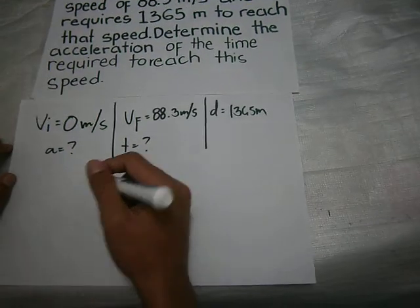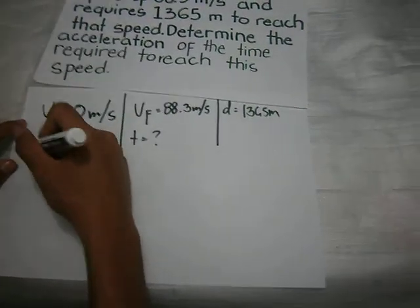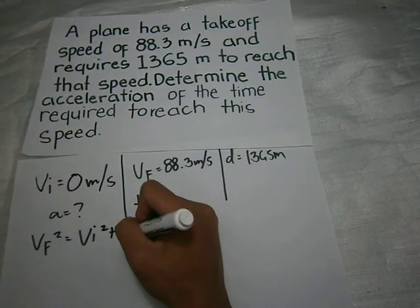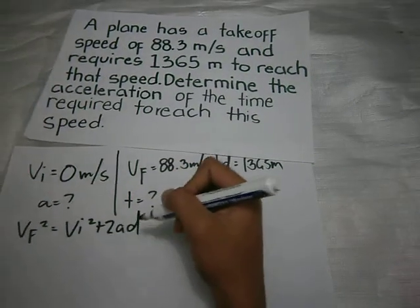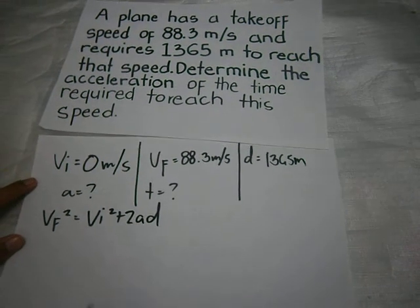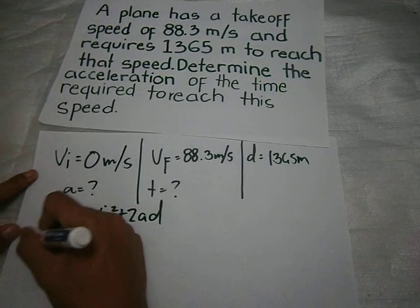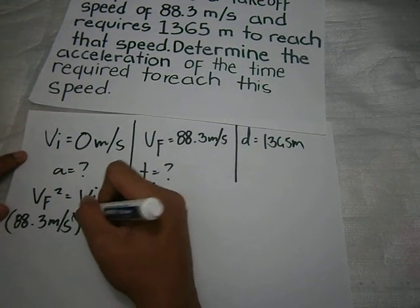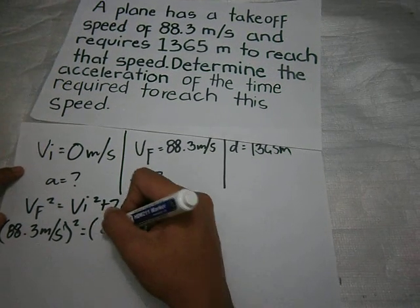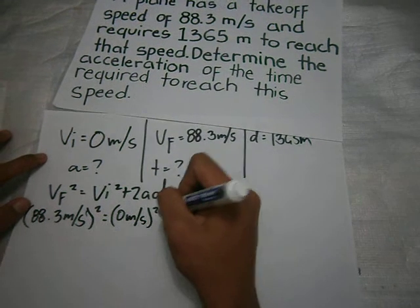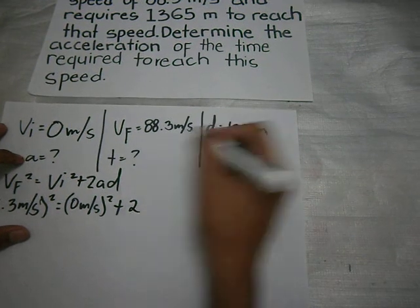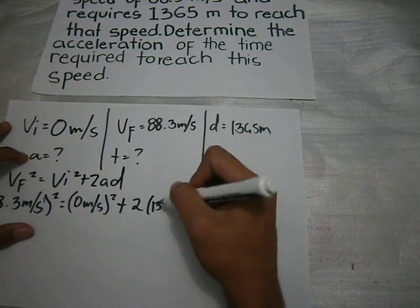First, we will find acceleration and we use this formula. Substitute: final velocity 88.3 meters per second, squared, is equal to initial velocity 0 meters per second, squared, plus 2 times A times distance 1365 meters.